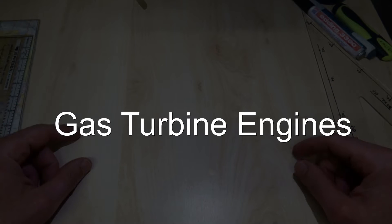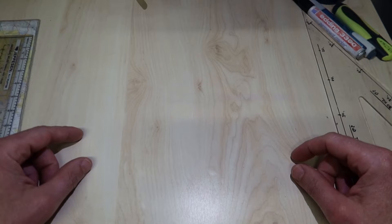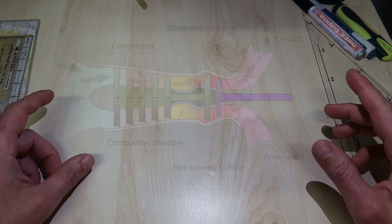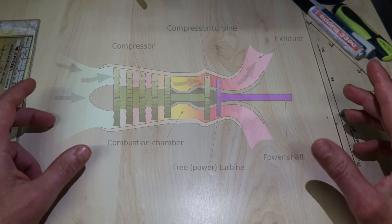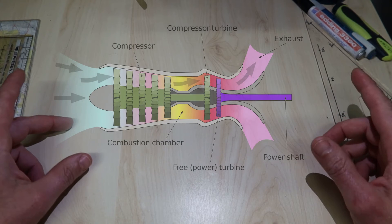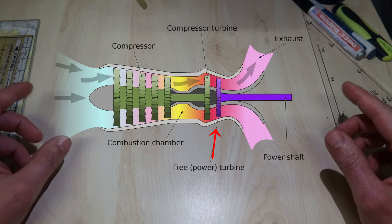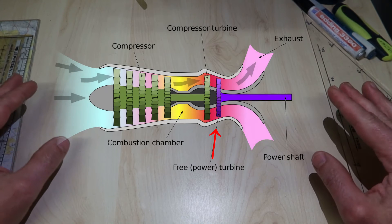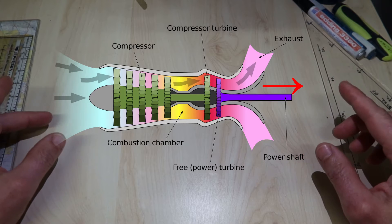Gas turbine engines. Helicopter gas turbines are almost always free turbine engines. The engine is made up of a gas generator and a free powered turbine connected to an output shaft which drives the rotors through the gearbox.